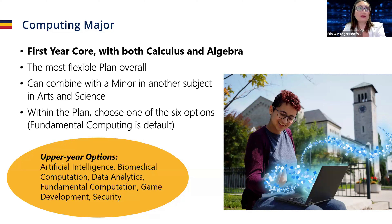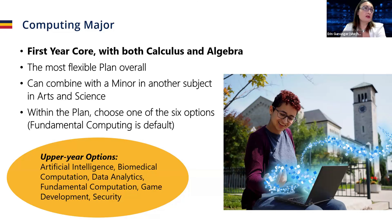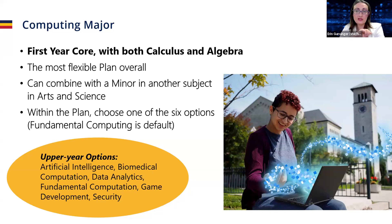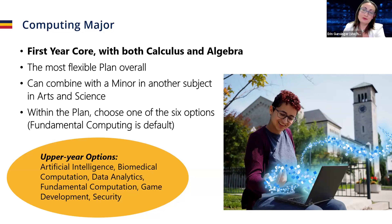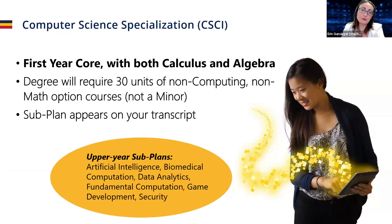The computing major is the most flexible plan — it gives you lots of opportunity to take electives from all different disciplines and tailor your education to your interests. You can combine it with a minor in another subject in arts and science, and within this plan you do choose one of the six options. One thing to note: those options, when you choose them, are not recorded on your transcript. It's an informal plan you follow — just one of the limitations of this particular plan.